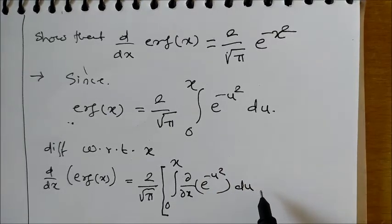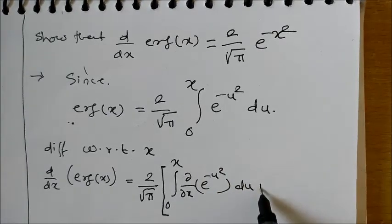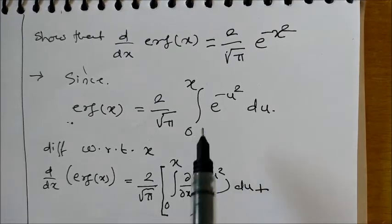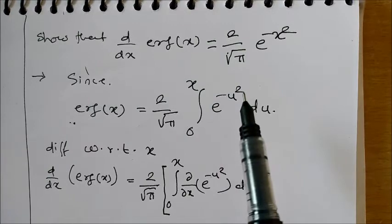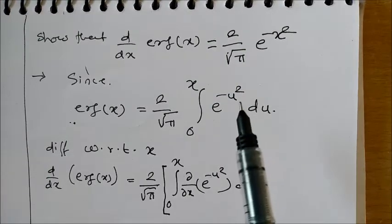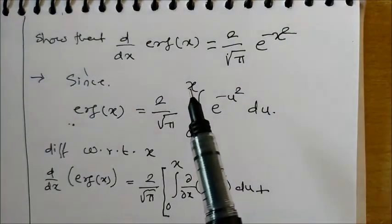now the function is e^(-u²), right? Here there is no x involved, so we will replace this